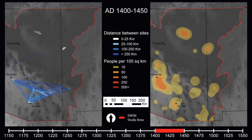By AD 1400, we see population decline in both the northern and especially the southern Southwest. There is also a decline in the number of network connections in the south as the total number of occupied sites decreases. In the north, network connections are almost exclusively limited to short distance ties among sites in the same region.